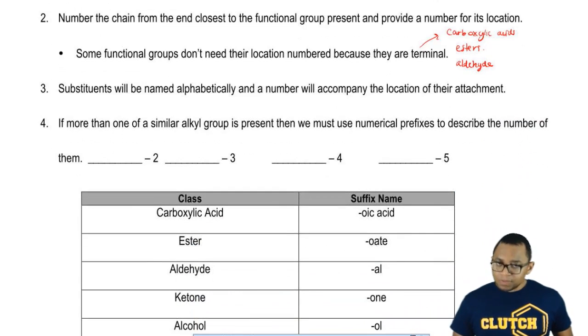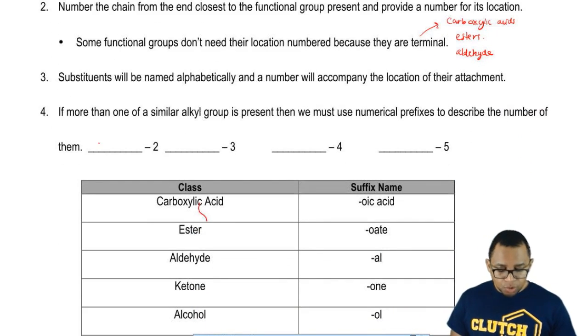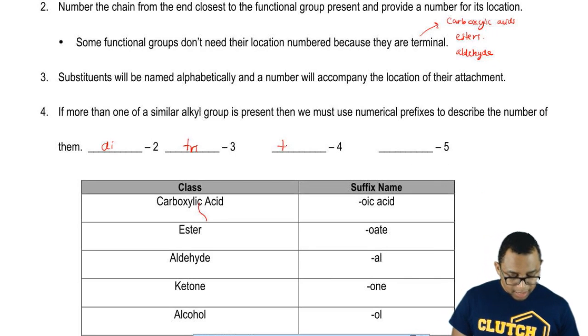Same thing with substituents. If you have similar substituents, then you use numerical prefixes, so di, tri, tetra, and penta.